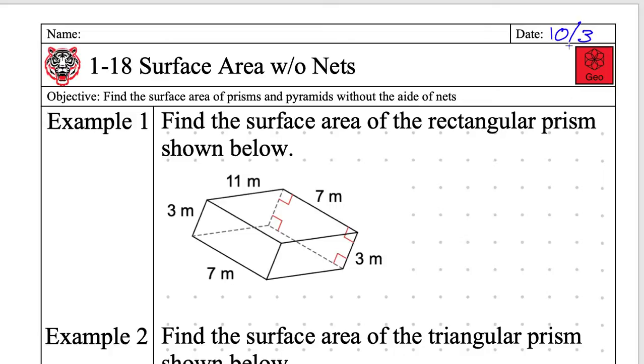Find the surface area of prisms and pyramids without the aid of nets. There it is. So they're not going to give you the net anymore. You have to do it all in your head. You have to have a big brain.